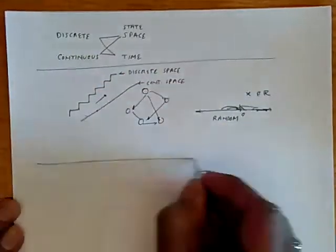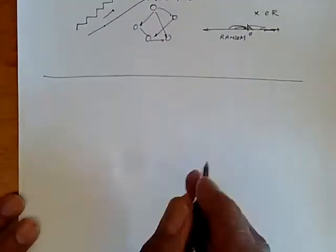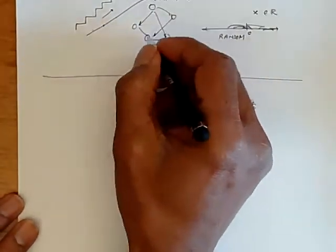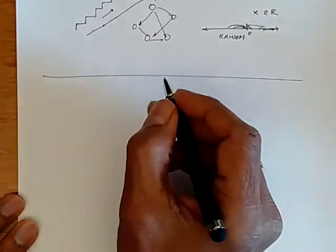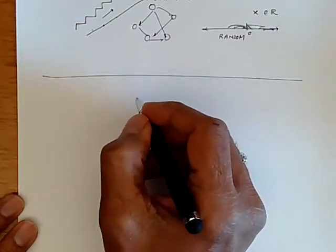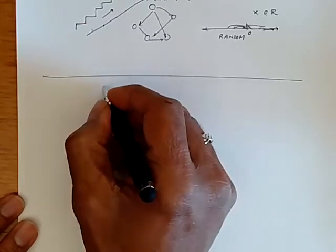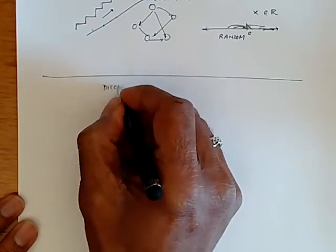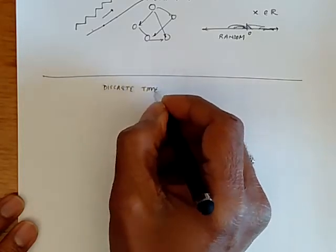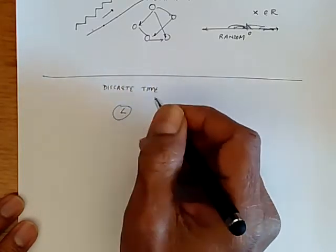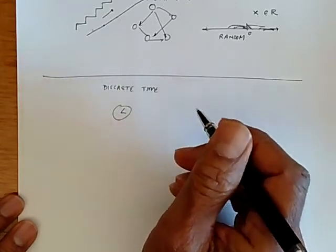What about continuous time? Well, similarly, we can think of transitions between the states happening either on a clock tick or without any regard to clock. So if transitions can happen only on the tick of a clock, then there's discrete time. So discrete time, we have a clock and the clock governs the motion of the process from state to state.